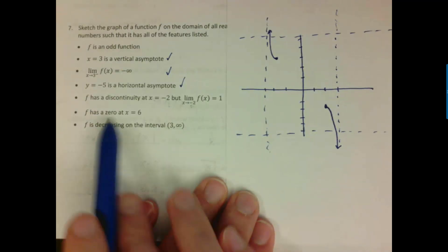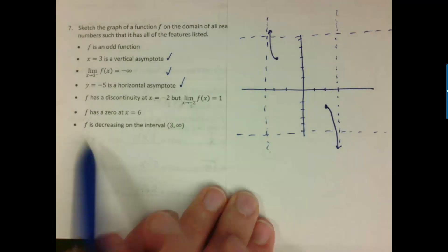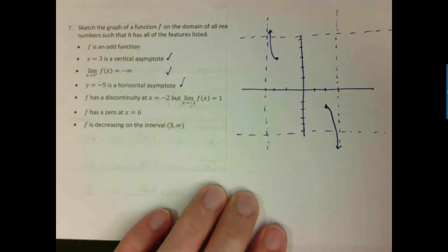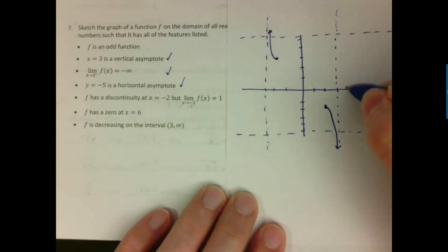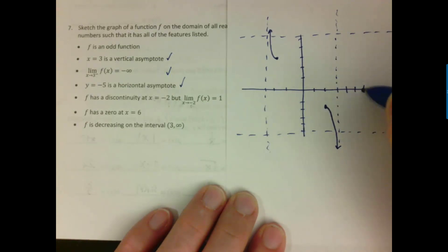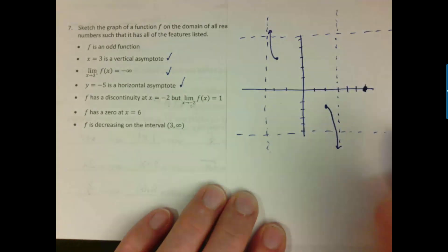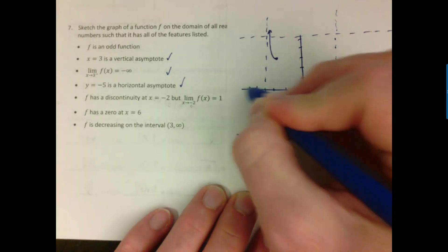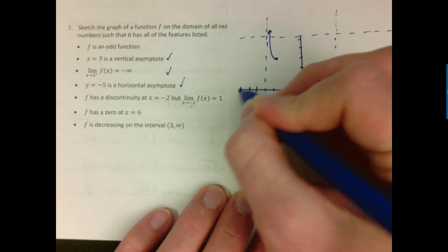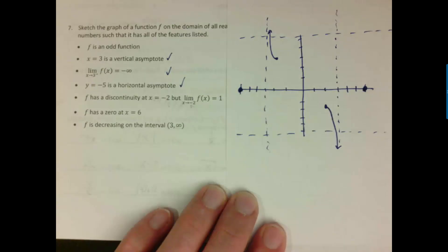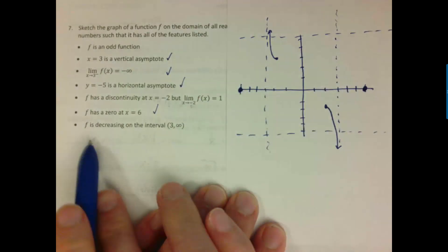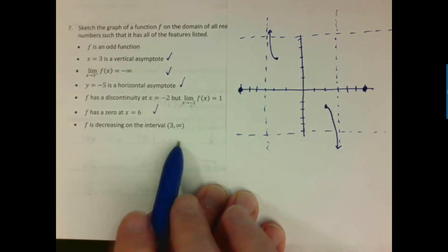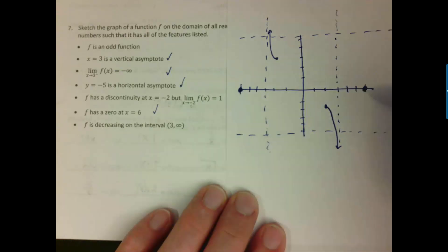Finally, f has a zero at x = 6. Since f is an odd function, there's also a zero at x = -6. We place those zeros on the graph accordingly and continue integrating all the conditions to produce a complete sketch.